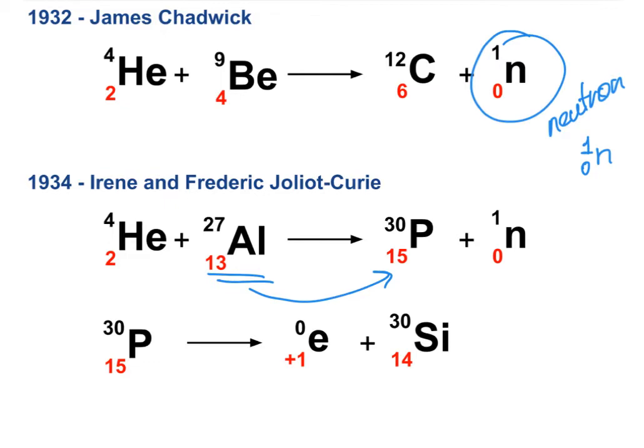It's important to understand that aluminum-27 would not undergo this transmutation into phosphorus-30 on its own. We initiated the transmutation of aluminum-27 into unstable phosphorus by shooting alpha particles into it. That is the defining feature of artificial transmutation.